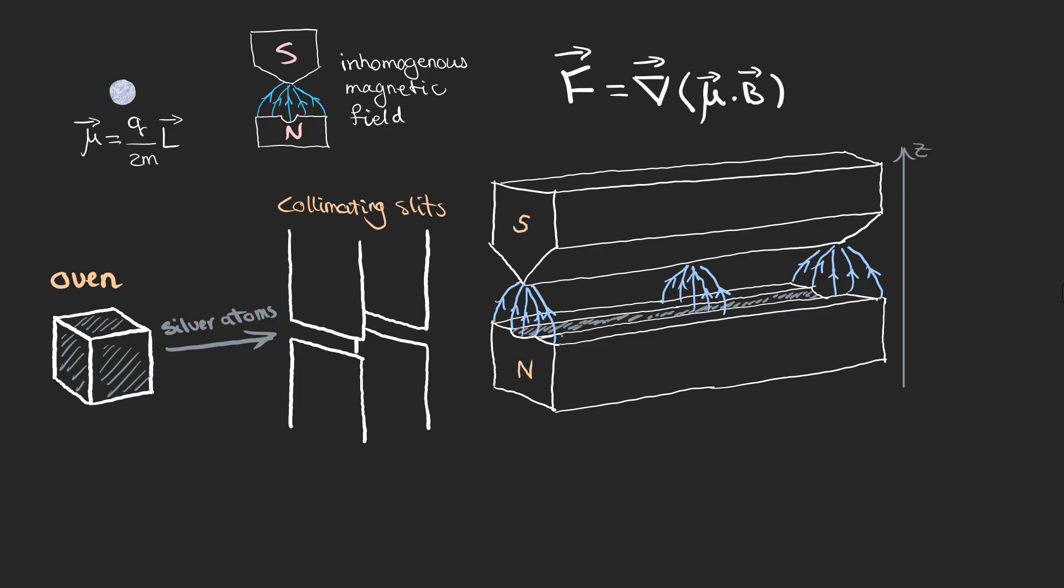The force on the silver atoms arises from their interaction with the non-uniform magnetic field. Each silver atom has a magnetic moment which behaves like a tiny magnet. When these atoms pass through the magnetic field, they experience a force that depends on the orientation of their magnetic moments relative to the field.